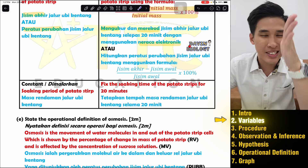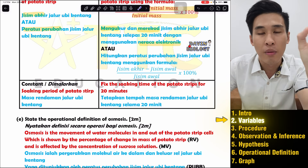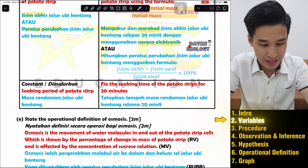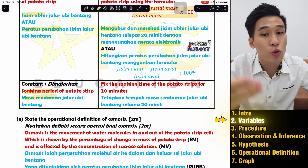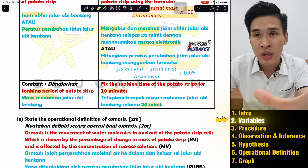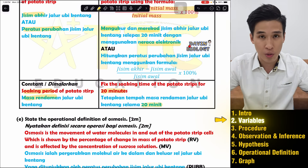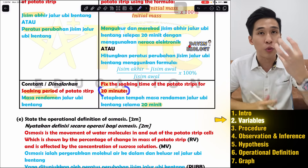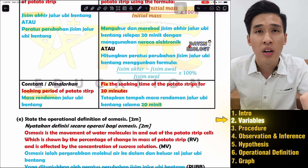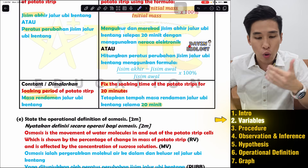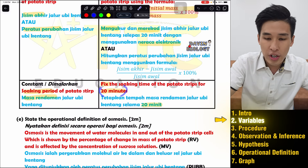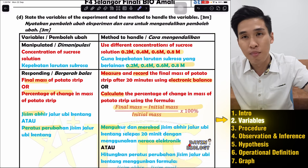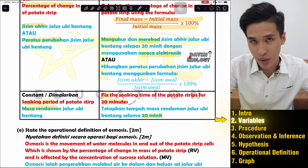For constant variable, avoid writing 'type of potato' — instead choose something that has a measurable value. For example, soaking period: fix the soaking period at 20 minutes. The value depends on the question — it could be 10 or 20 minutes. You can also write the volume of sucrose solution, such as 10 ml, or the length of the potato strip, such as 5 cm. Always mention the value.